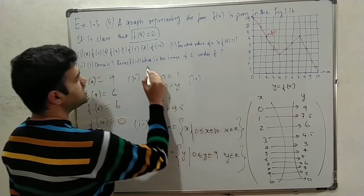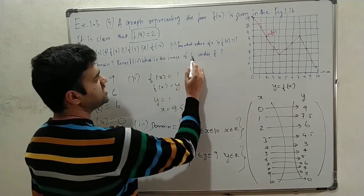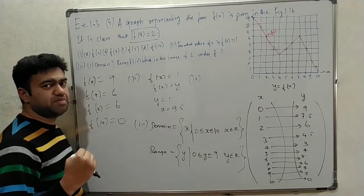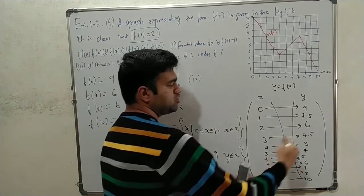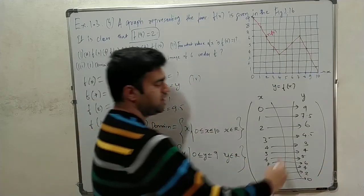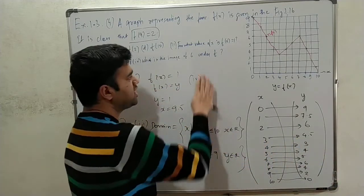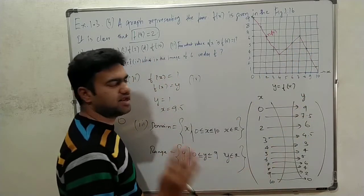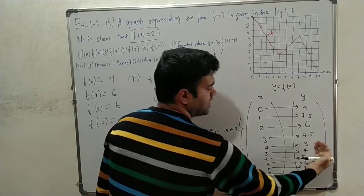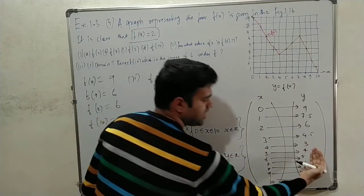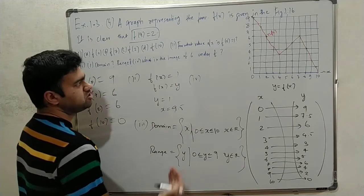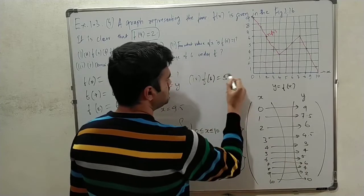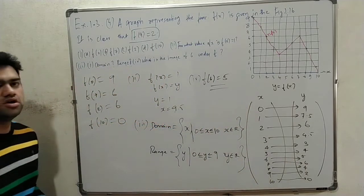Fourth sub-question: what is the image of 6 under this function? Image means — from the basics video — the domain maps to the image, and the reverse is the pre-image. So the image under f means f of 6. Looking at the graph, f of 6 gives y equal to 5. So 5 is the image of 6 under f.